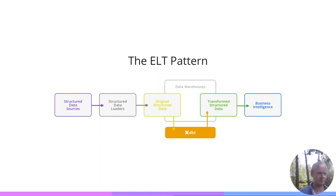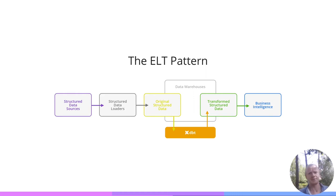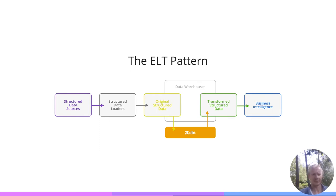The typical data stack today could be synthesized as: data sources like PostgreSQL databases and APIs such as AdWords or Facebook APIs; integration services like Fivetran, Segment, and open-source solutions like Airbyte; all ending up in a data warehouse like Snowflake, BigQuery, or Redshift. On top of that, a transformation tool, which is almost certainly DBT. You may have a reverse ETL tool like Census or Hightouch, and finally a business intelligence service like Looker or Redash.